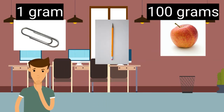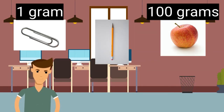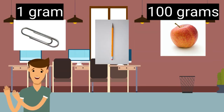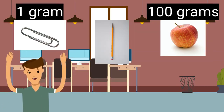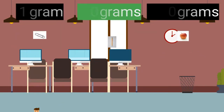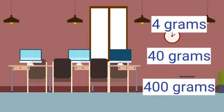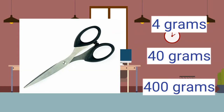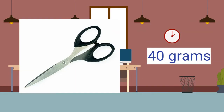Think about a pencil. How much would you estimate a pencil weighs? Well, we know a pencil weighs a little more than a paperclip. We also know that it weighs much less than an apple. We could guess that a pencil probably has a mass of 10 grams. Look at these three choices. Which would be the best estimate for the mass of a pair of scissors? A pair of scissors probably weighs around 40 grams. It's heavier than a paperclip but less than an apple.